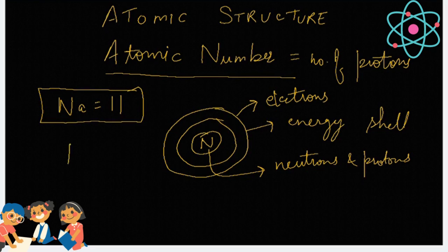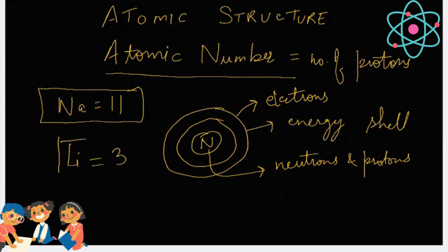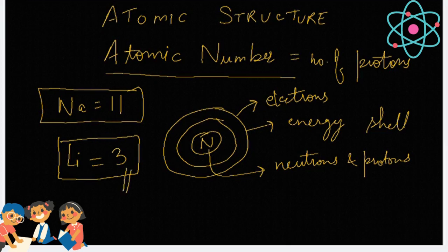Similarly, if I tell you that lithium has three protons in the nucleus, so what will be its atomic number? It will be three itself. I hope this concept is clear.